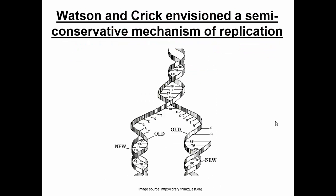Watson and Crick envisioned something that was eventually shown to be true — they envisioned that DNA was semi-conservatively replicated. What this means is that if you have two old DNA strands, each of the old strands separates from the other, and then each old strand is used to make a new strand. So at the very bottom, you can see that once we have an old strand and a new strand paired together — twice over — the DNA has been replicated.